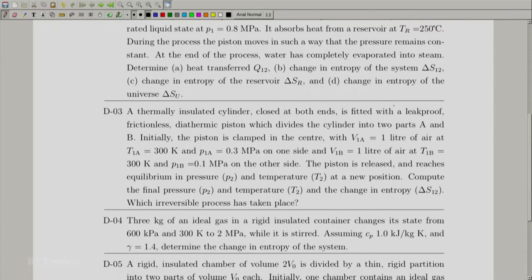The two parts are known as A and B. Initially the piston is clamped in the centre, so the volume of the two parts are the same initially. One litre as well as one litre, V1A and V1B. And the states of one side and other side are given. Air is the fluid.